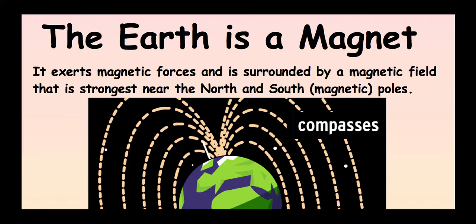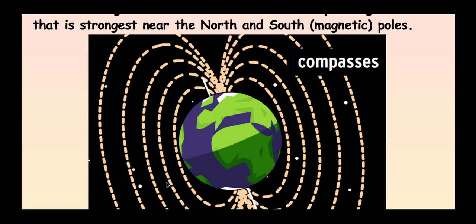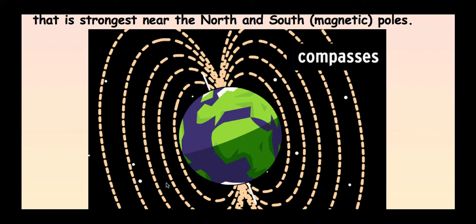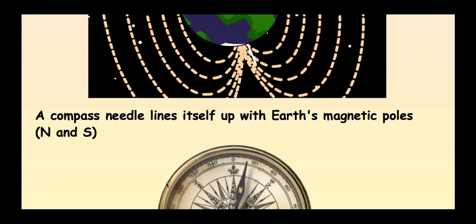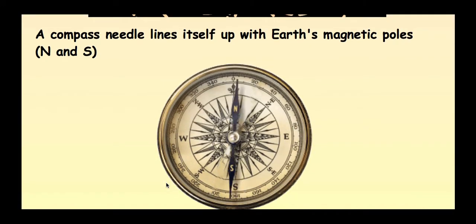So you might not have known this, but the earth itself is a magnet. It exerts magnetic forces and is surrounded by a magnetic field. And the field is strongest near the north and the south poles. These are actually called the magnetic poles. So this is earth's version of the magnetic field. So we looked at that picture with the red arrows. This is the same thing, except with the earth and our magnetic field. And compasses line themselves up with earth's magnetic poles, north and south poles. So the compass is actually reading the magnetism of earth.